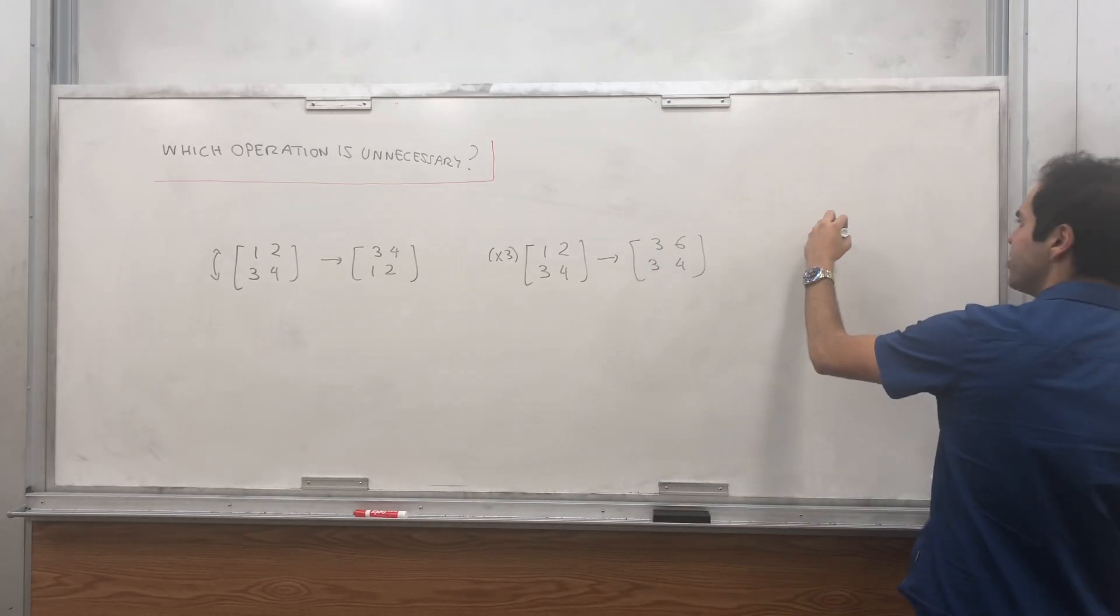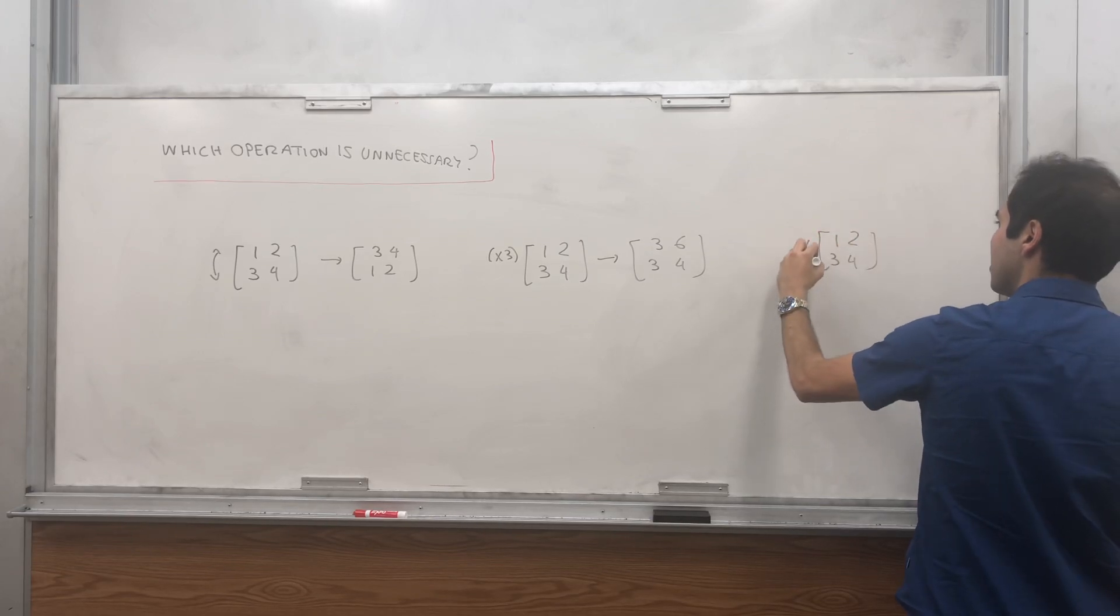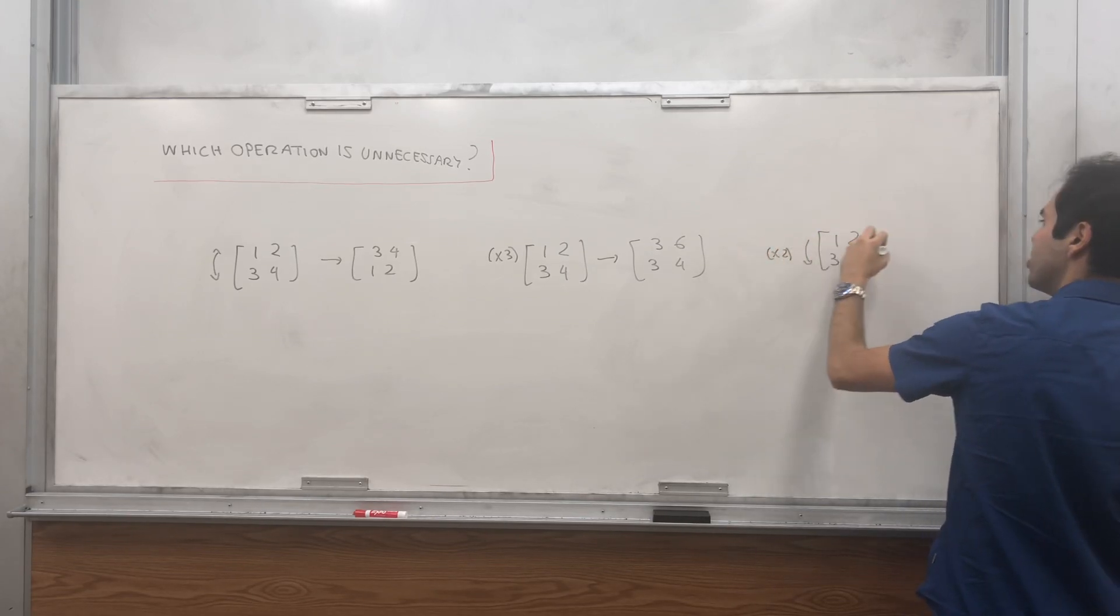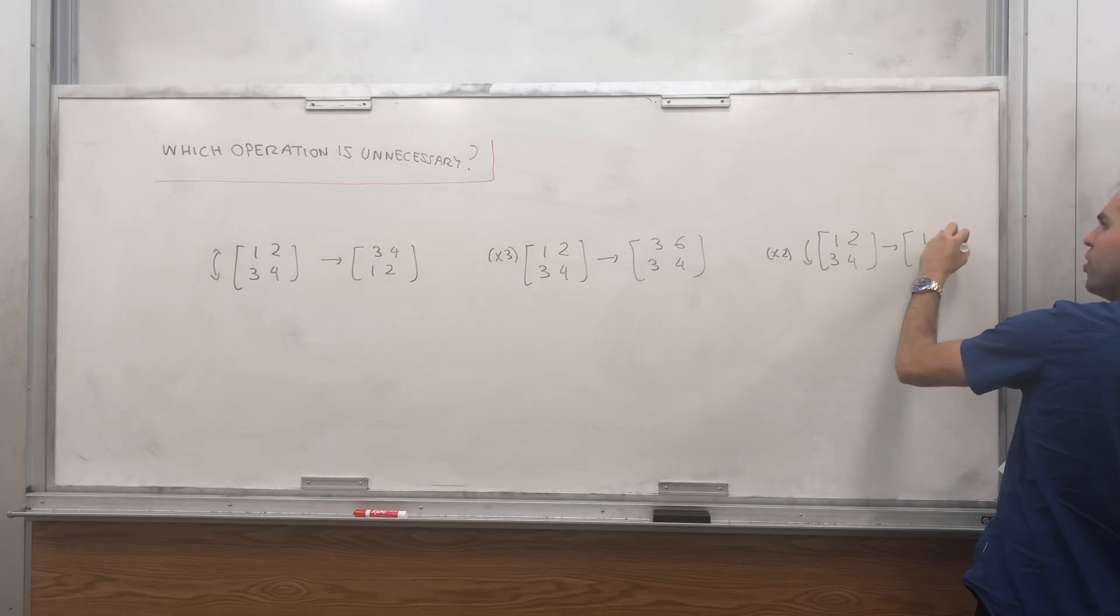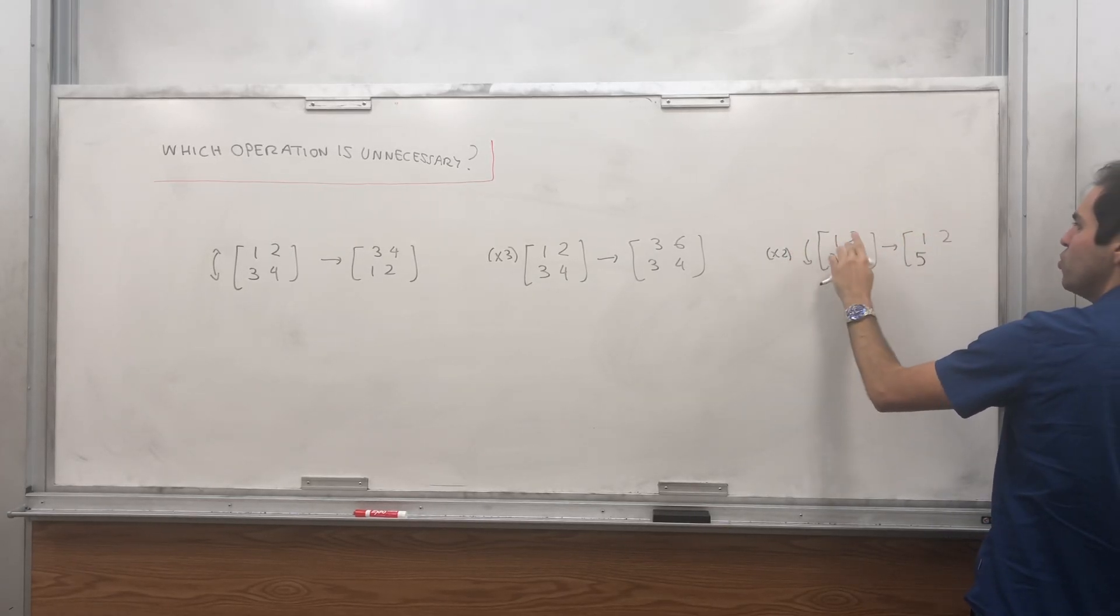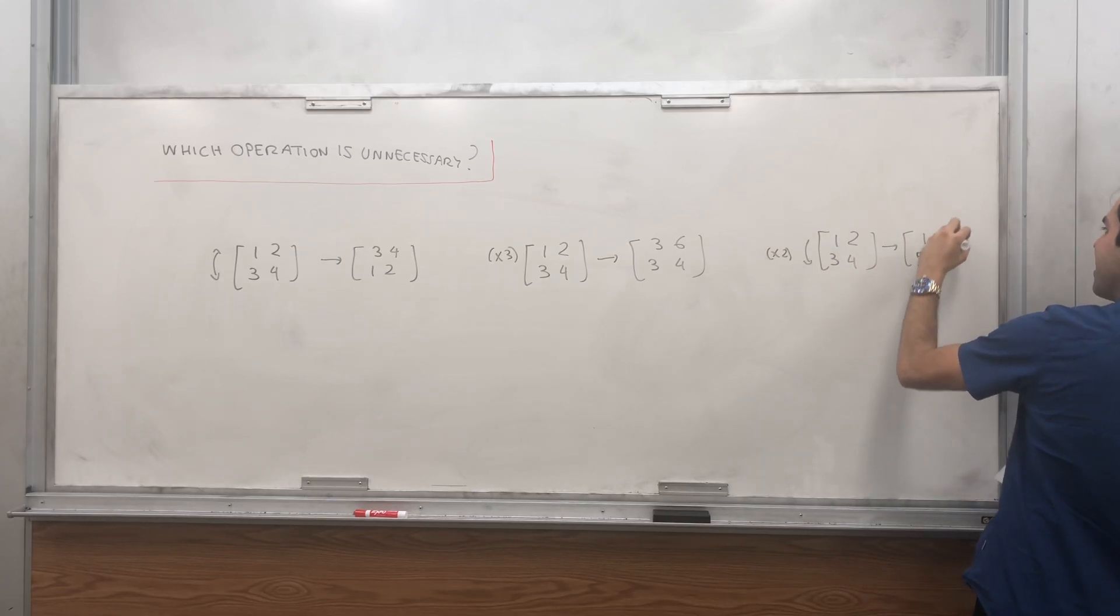And finally, you can also add a multiple of one row to the other. This one to, let's say, get one, two, and then two plus three, which is five, and then two times two, which is four, plus four, which is eight.